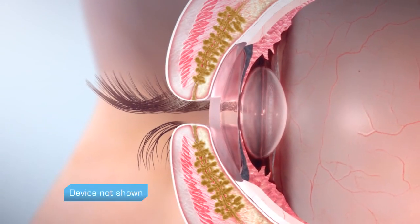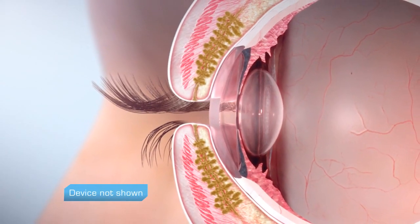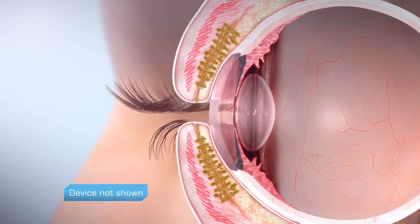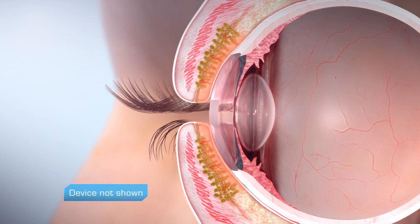The LipiFlow system uses heat and pressure to clear blocked meibomian glands. By applying heat directly to the glands on the inner eyelid surface, heat rapidly and efficiently raises gland contents, liquefying any blockage and making it easier to remove from the gland.